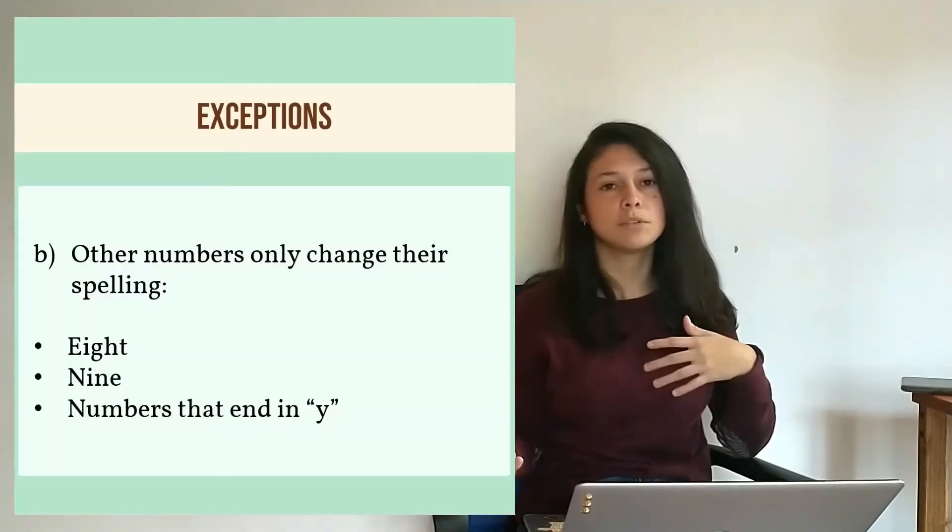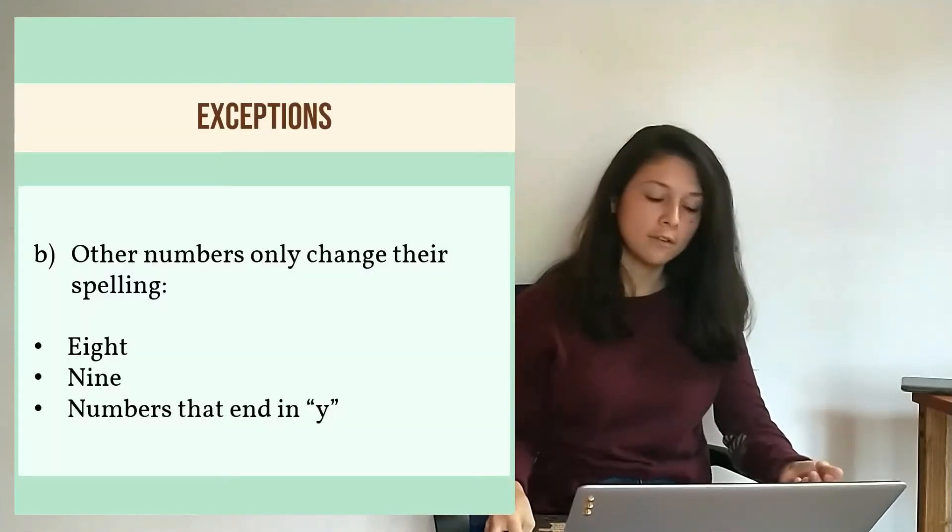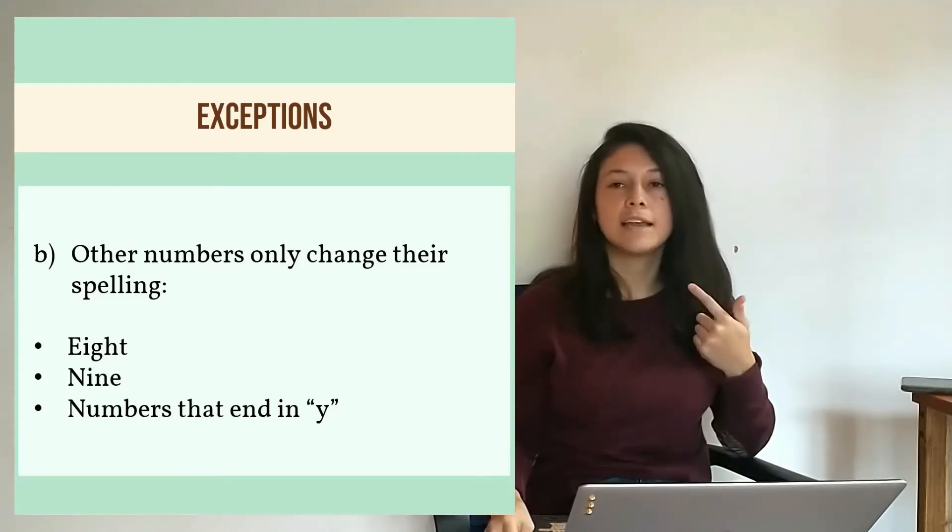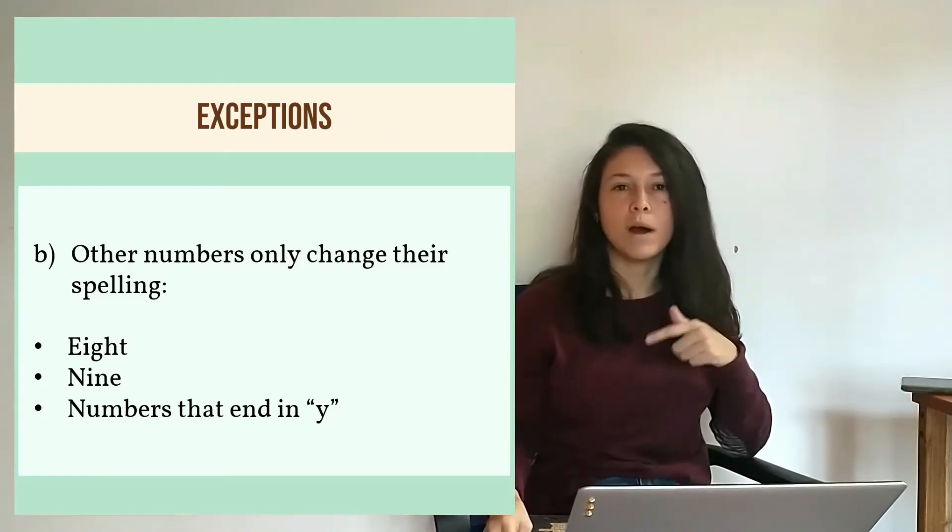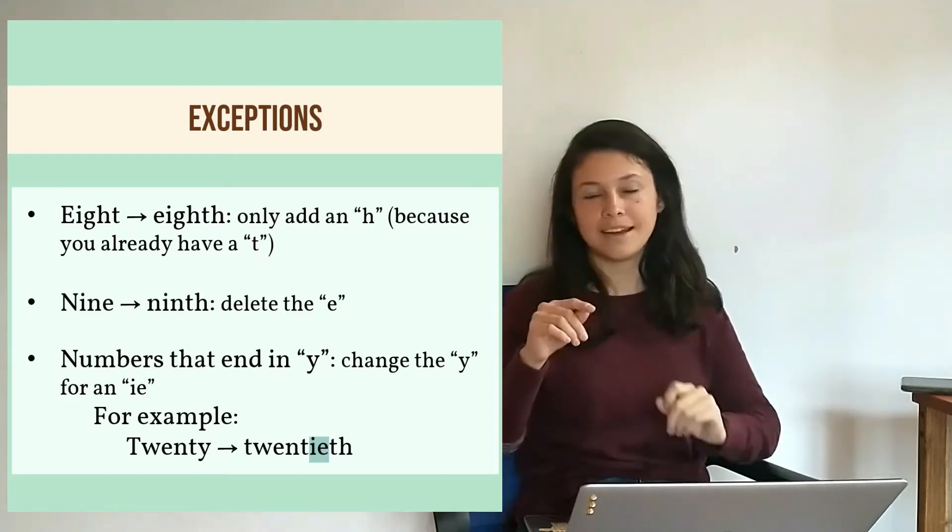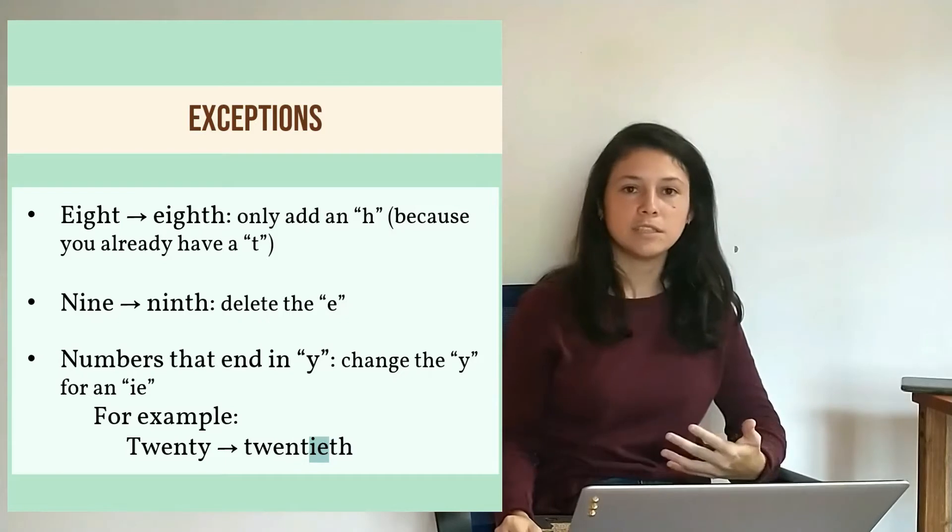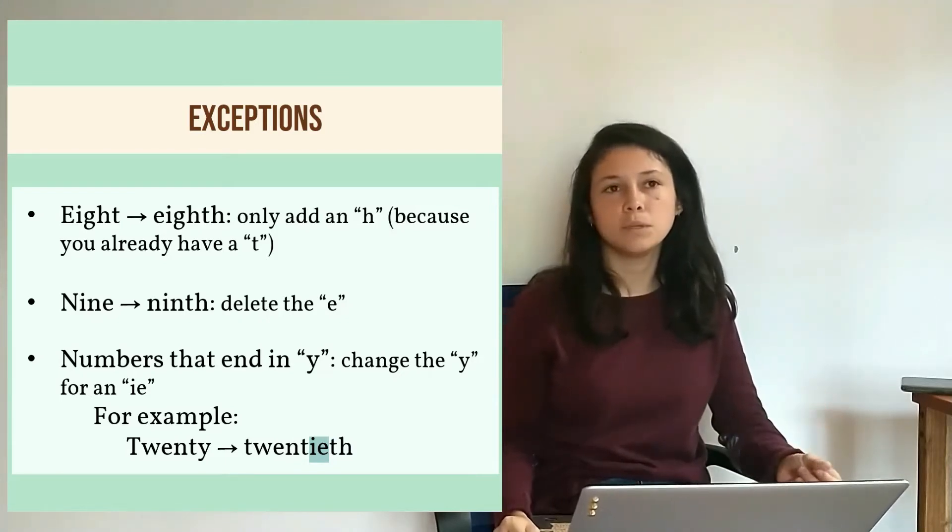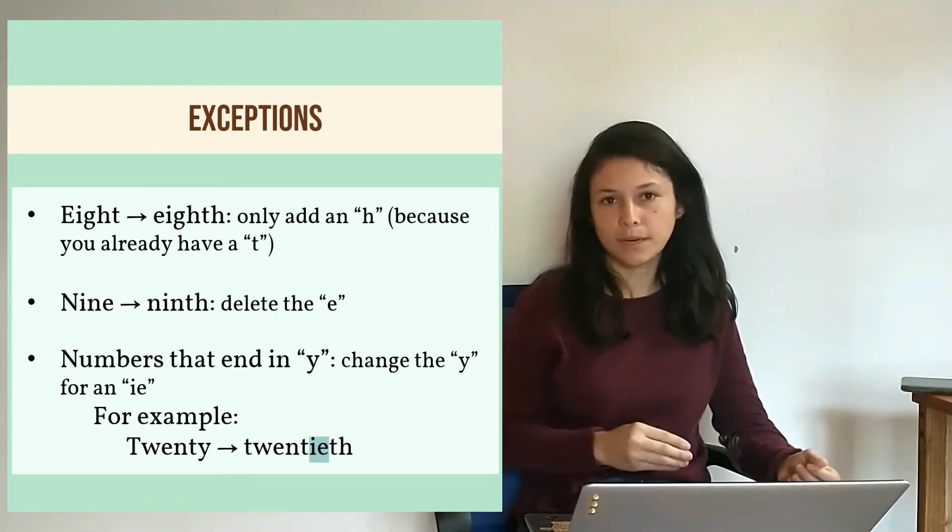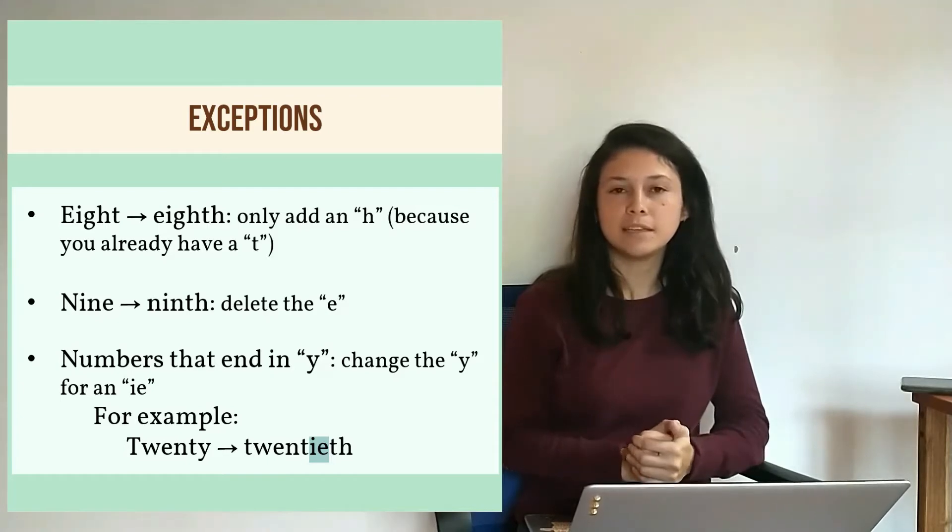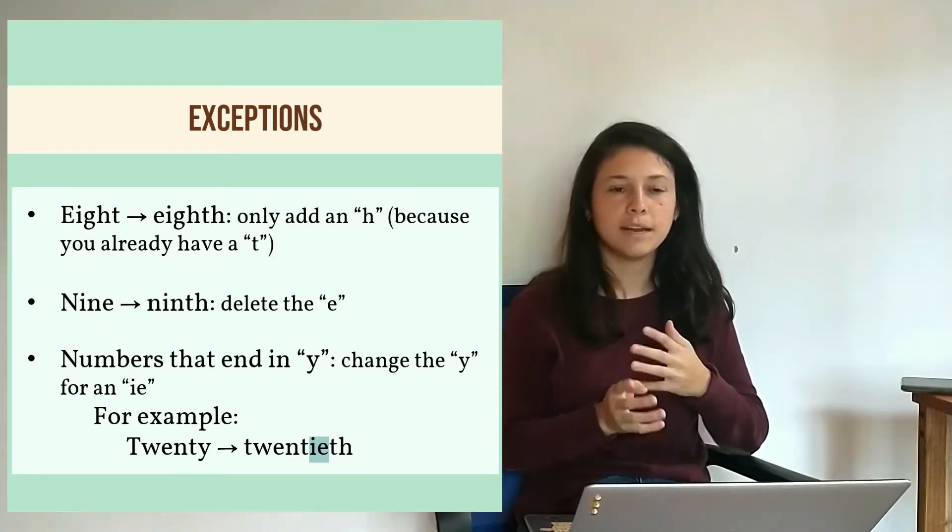Then there are some numbers that only change in spelling. For example, 9, 8, and the numbers that end in Y. 9 changes to ninth, so we drop the E. 8 changes to eighth. We just add the H because we already have the T. And the numbers that end in Y change the Y to an IE.